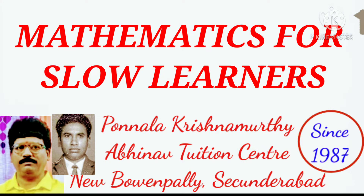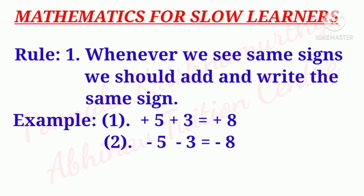Mathematics for slow learners. Rule number one: whenever we see same signs, we should add and write the same sign.